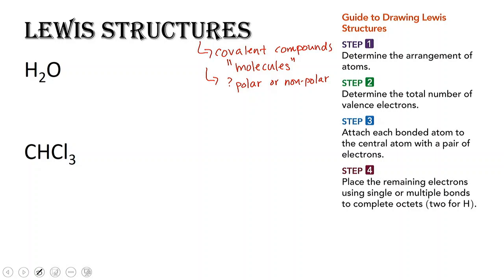So what is a Lewis structure? It helps us to visualize what these molecules look like. Remember, everything in chemistry is a model. So this is how we've modeled things so that we can visualize what we cannot see with our own eyes. Lewis structures are a way to draw these compounds so you can see how they arrange themselves in three-dimensional space.